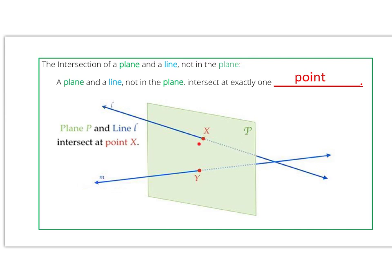We know it's passing through the plane because of the dashed portion here of line L. When a line passes through a plane, it will intersect that plane at exactly one point, in this case point X.